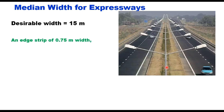A strip of 0.75 meter width adjacent to the carriageway towards the depressed median in either direction shall be paved with the same specification as the adjoining carriageway. As in the case of multi-lane highway, the depressed median on expressways will also have a suitably designed drainage system so that water does not stagnate in the median.